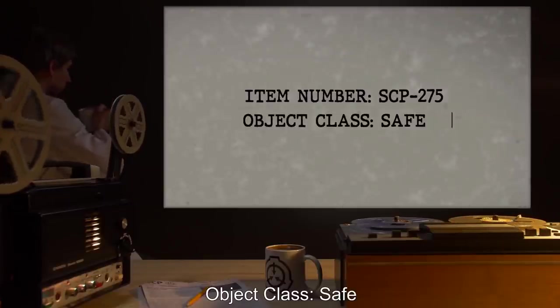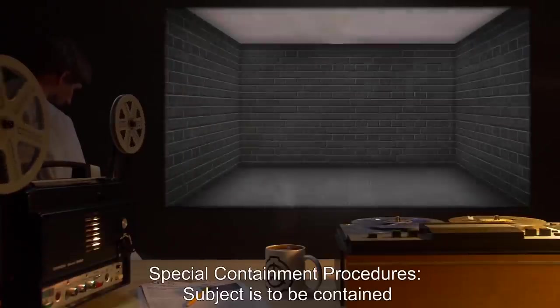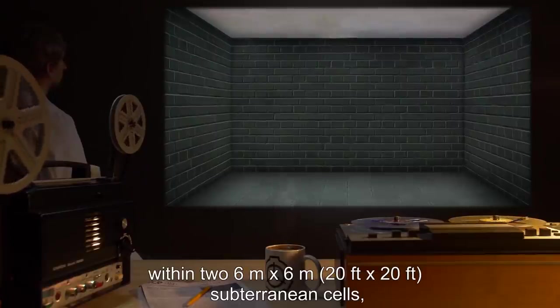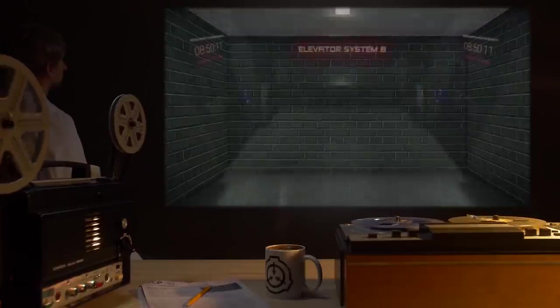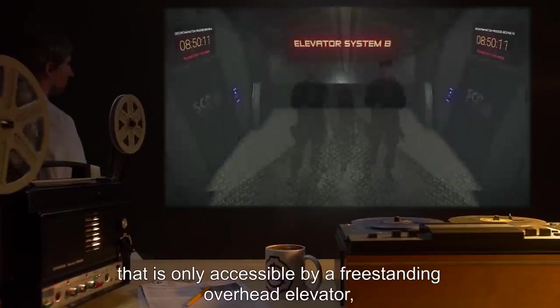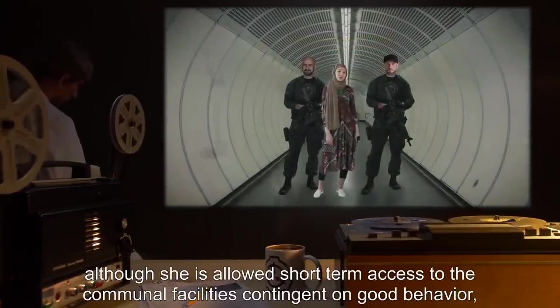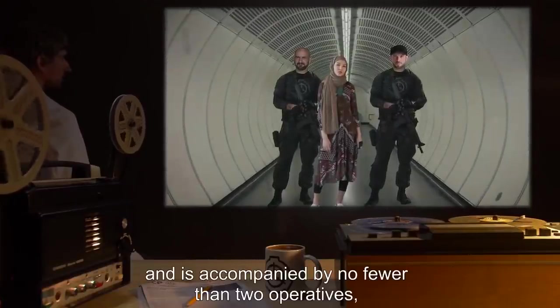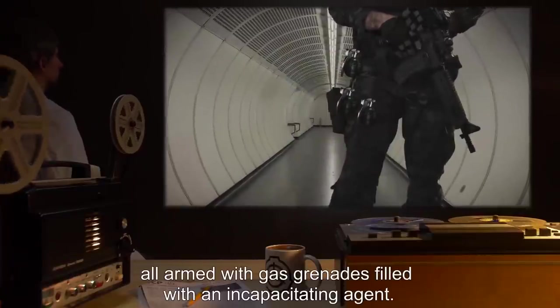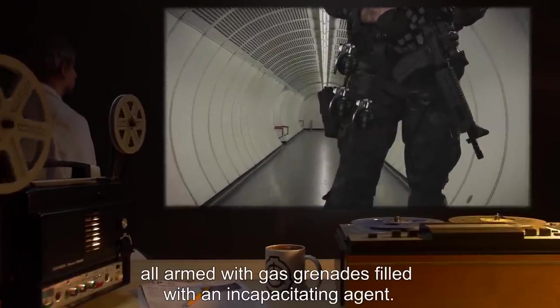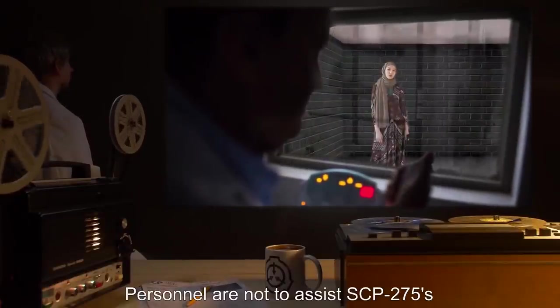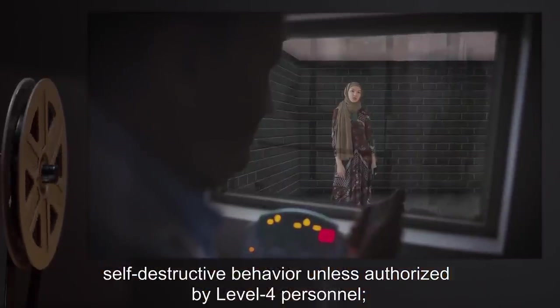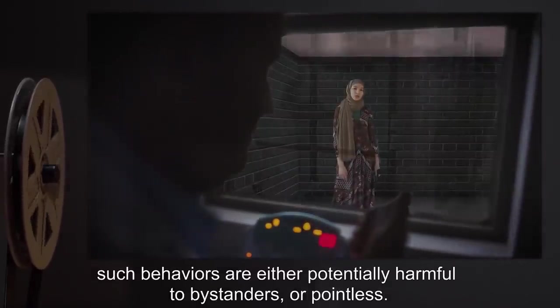Item number SCP-275, Object Class Safe. Special Containment Procedures: Subject is to be contained within two 6-meter by 6-meter (20-foot by 20-foot) subterranean cells that is only accessible by a freestanding overhead elevator, although she is allowed short-term access to the communal facilities contingent on good behavior and is accompanied by no fewer than two operatives, all armed with gas grenades filled with an incapacitating agent. Personnel are not to assist SCP-275's self-destructive behavior unless authorized by Level 4 personnel. Such behaviors are either potentially harmful to bystanders or pointless.